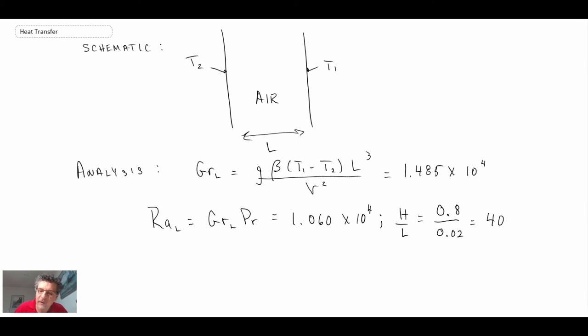And so it turns out the aspect ratio is 40, and that's to be expected because we're dealing with a very, very tall window and the gap between the two panes is quite minimal. So we know that it's a window, it's very tall, very narrow aspect ratio of 40.